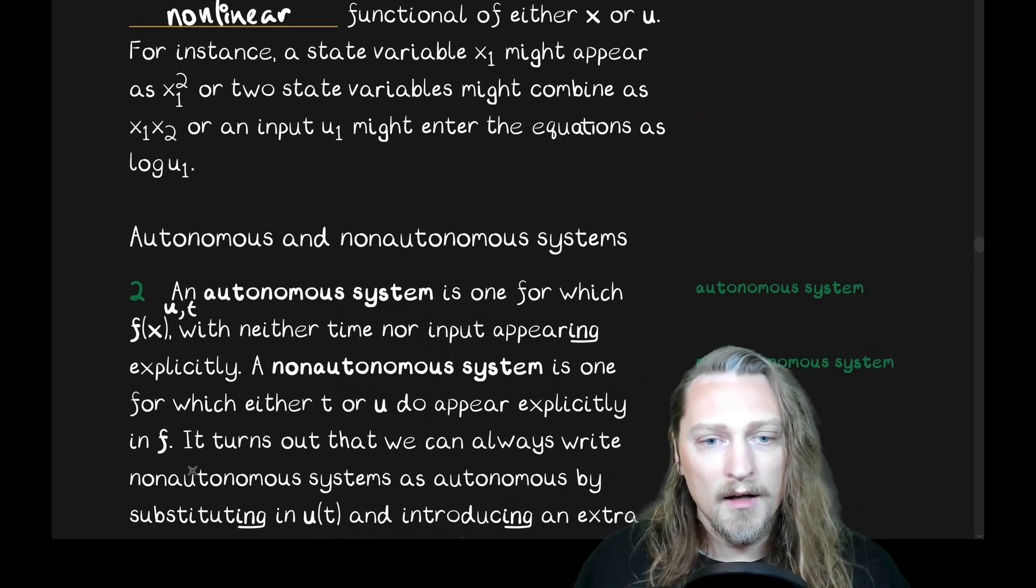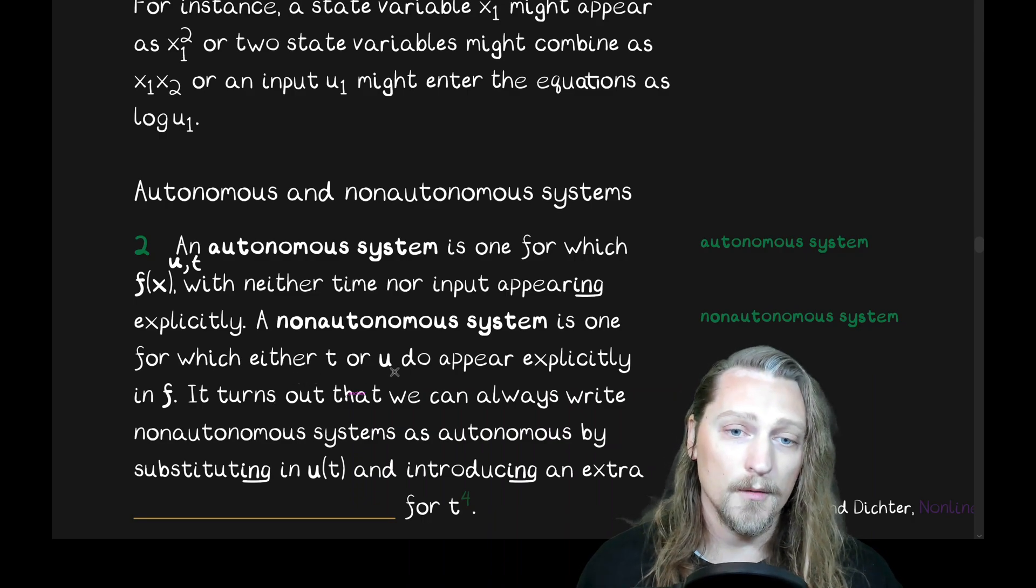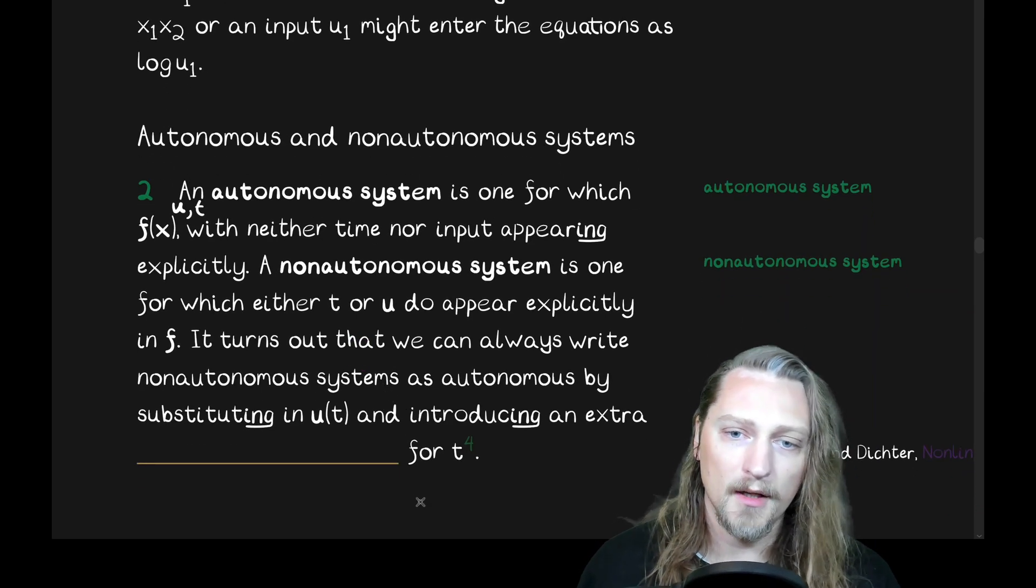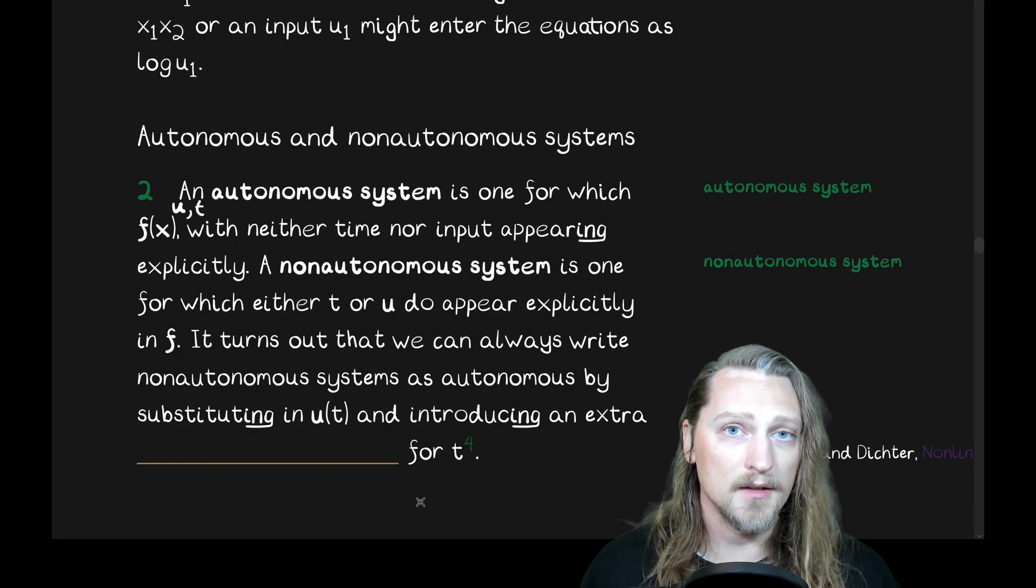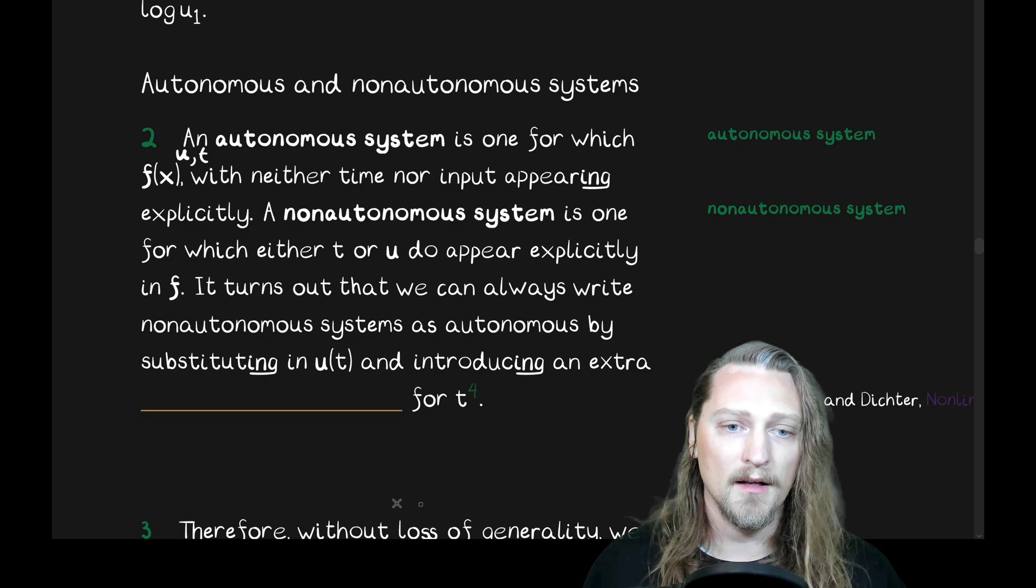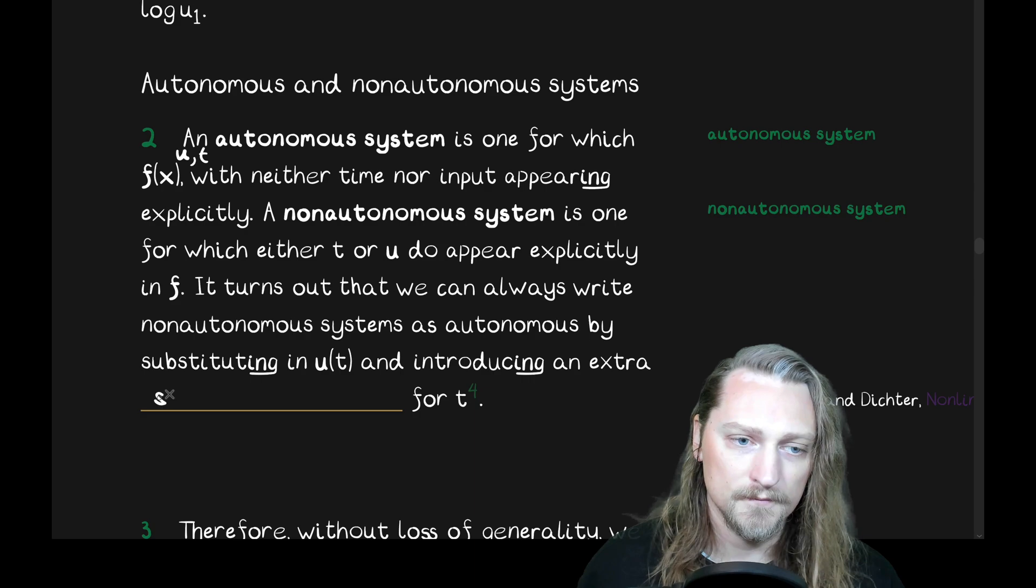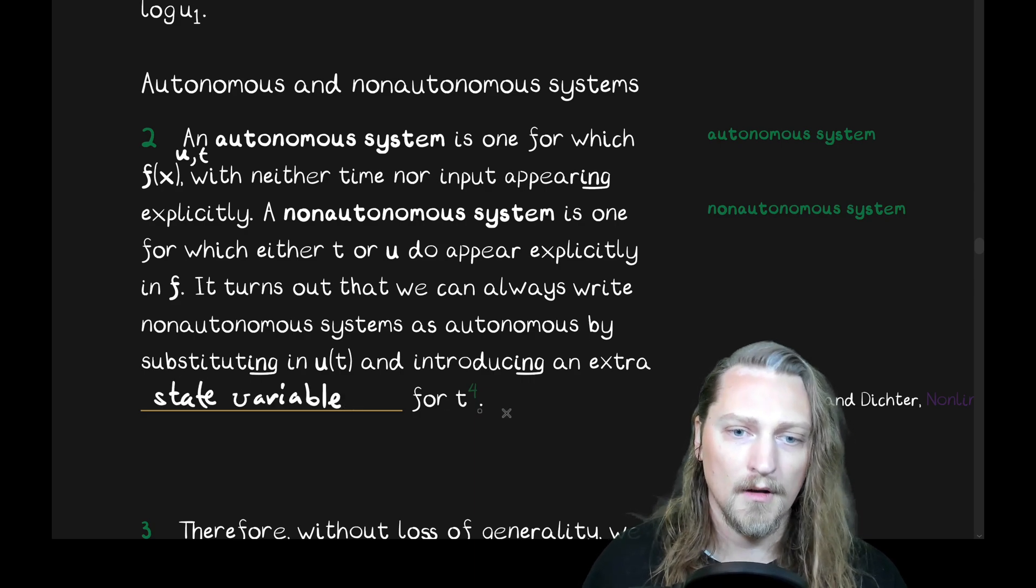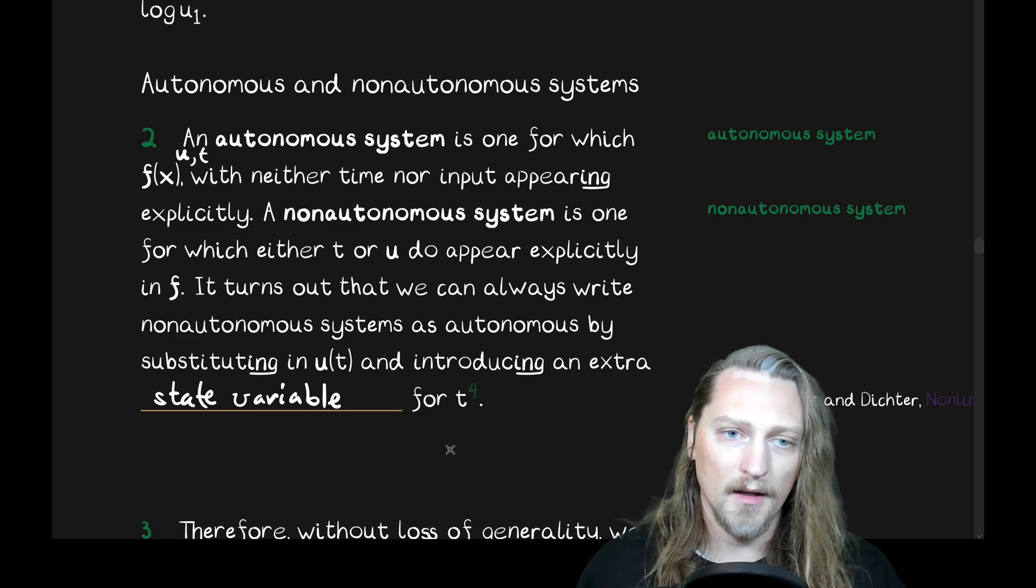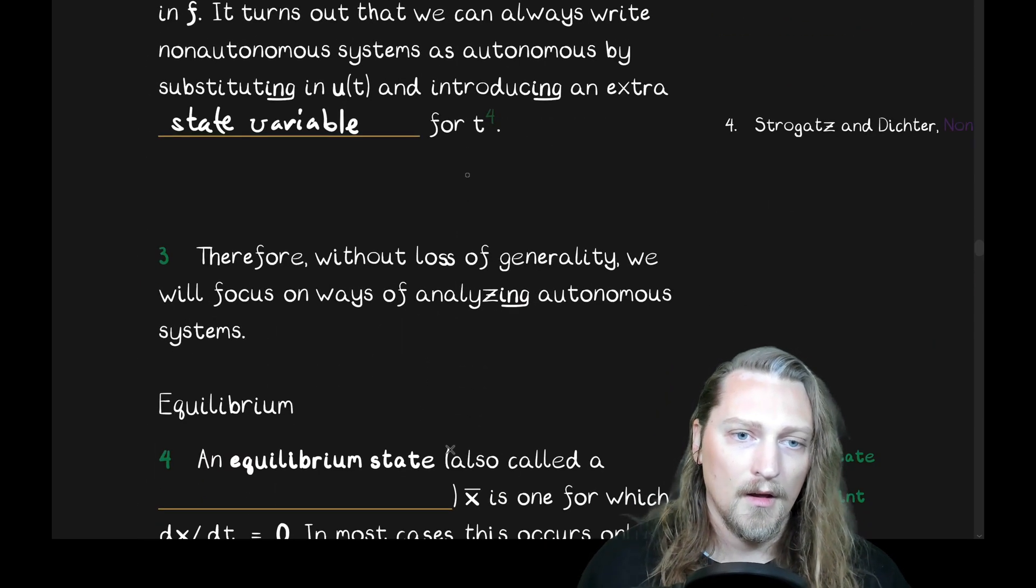A non-autonomous system is one for which either t or u, or both, do appear explicitly in f. It turns out that we can always write non-autonomous systems as autonomous by substituting in u of t and introducing an extra state variable for t. So, that's one way to convert a non-autonomous system into an autonomous system.